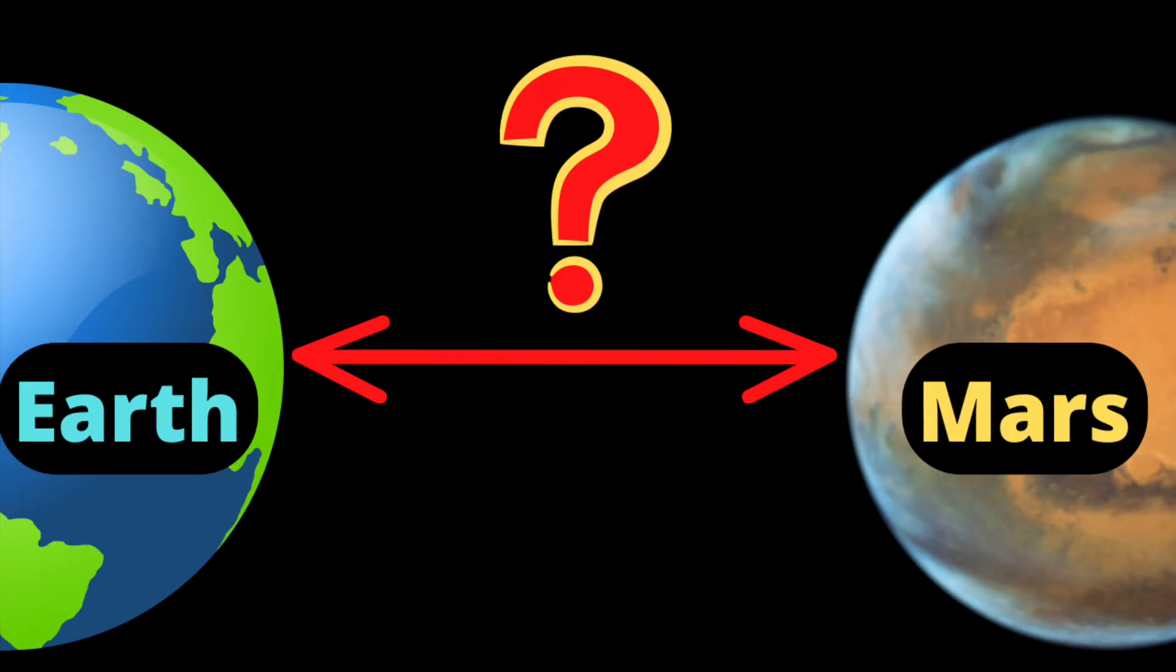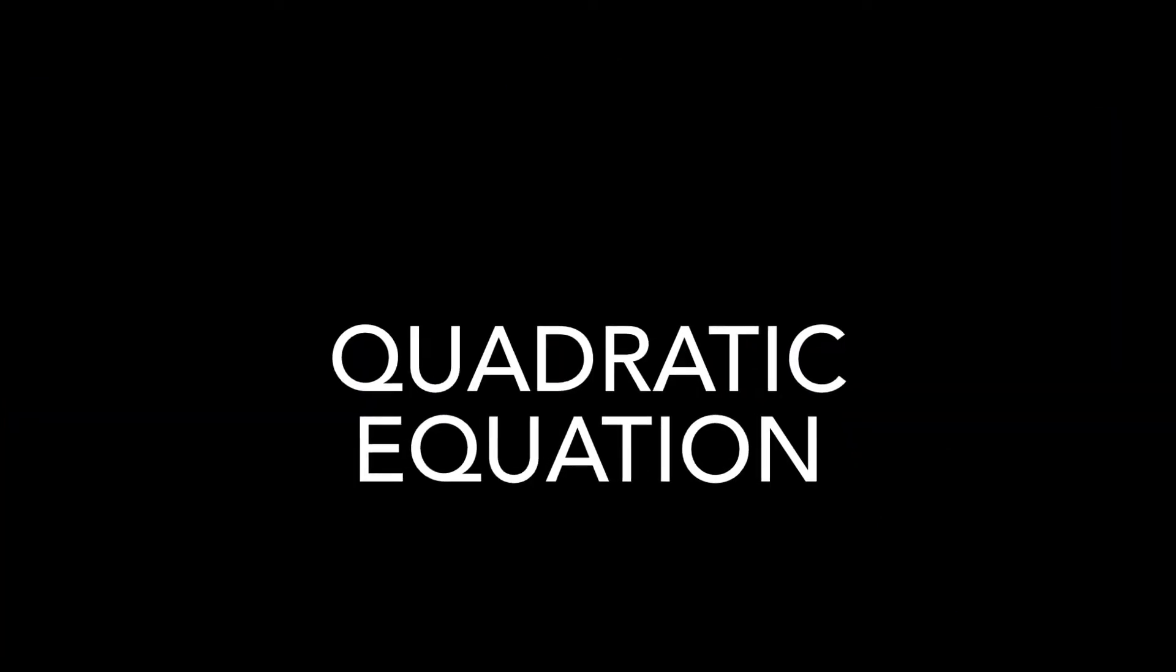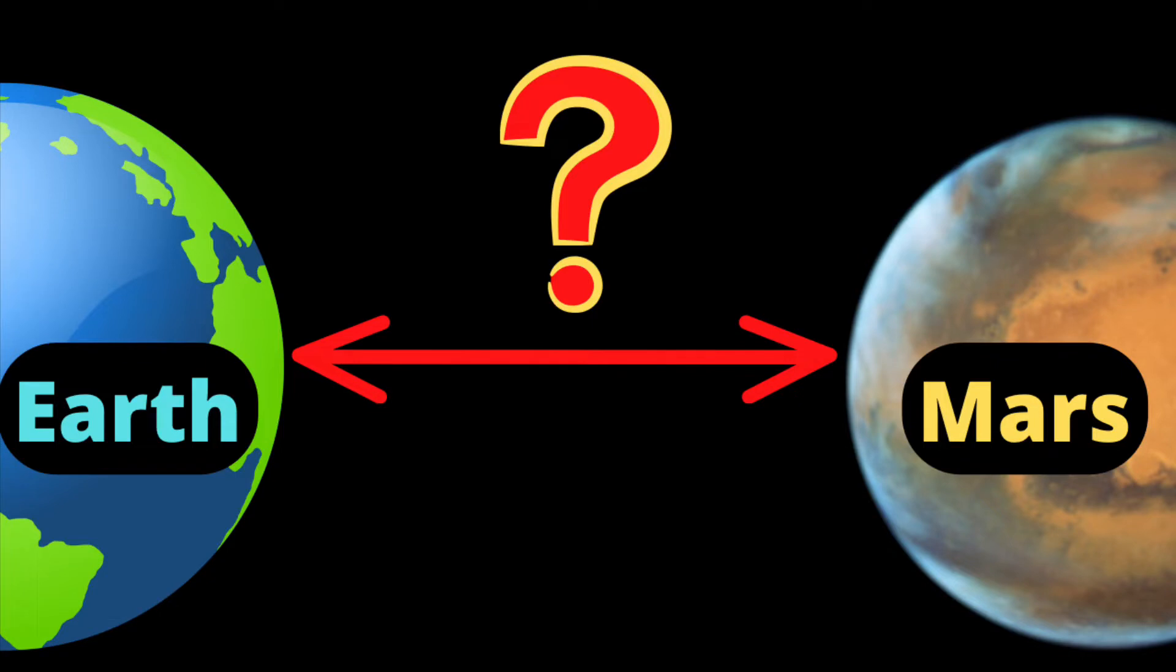Calculating distance between two planets is not as hard as you think. It is actually way more easier than solving a quadratic equation. After watching this entire video, even you can measure distance between Earth and any other planets in our solar system.